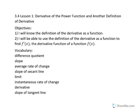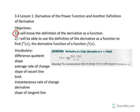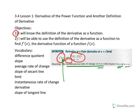We have two objectives for today. Our first objective is you'll know the definition of the derivative as a function. In the previous section, we looked at the definition of the derivative at a particular point. We had the limit of this difference quotient as x approached c, and this gave us the derivative of a function at a particular x value, represented here by c. This gave us the instantaneous rate of change of f with respect to x at x equal to c. Graphically, it was the slope of the tangent line to the graph of f at a particular x value, whatever c was.